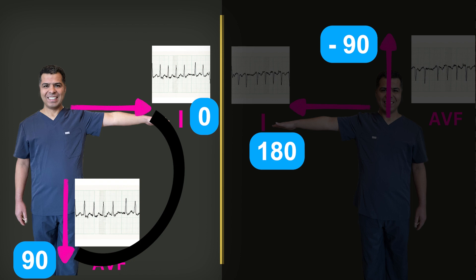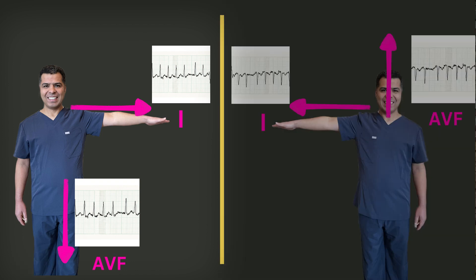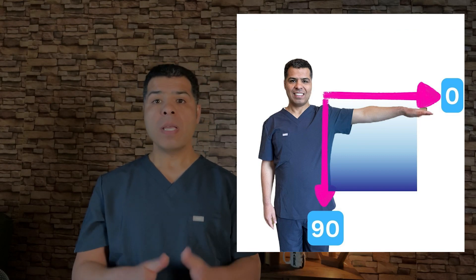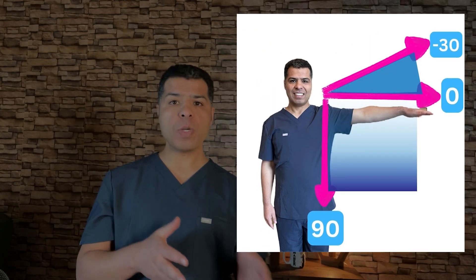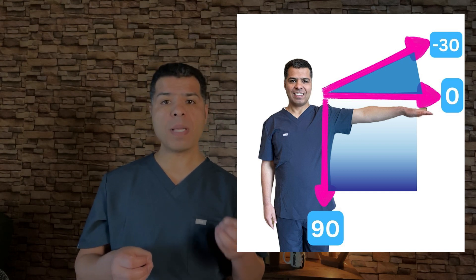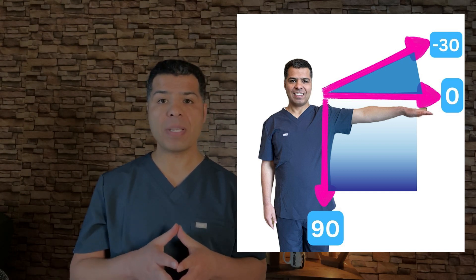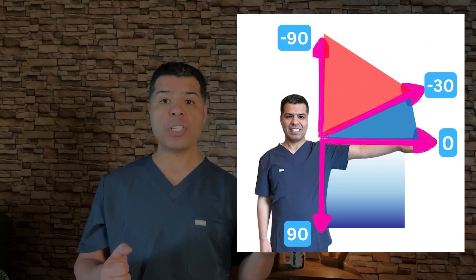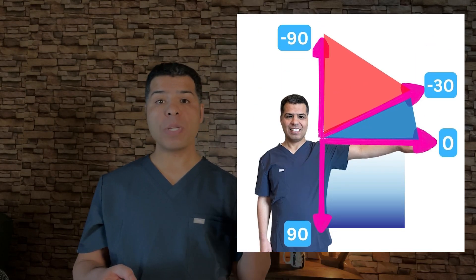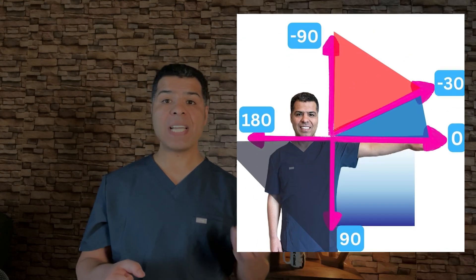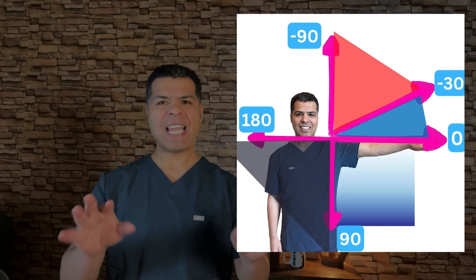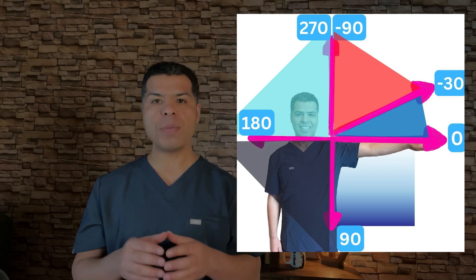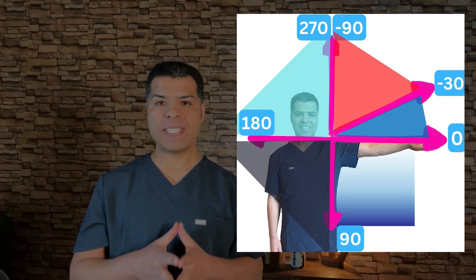A normal cardiac axis is downward to the left, between 0 and 90 degrees. Minus 30 to 0 is still considered normal, but some call this a normal variant. Anything left of minus 30 degrees is considered left axis deviation, and anything right of 90 degrees is considered right axis deviation. Watch out — anything right of 180 degrees is considered extreme right axis deviation, or what we call a northwest axis.